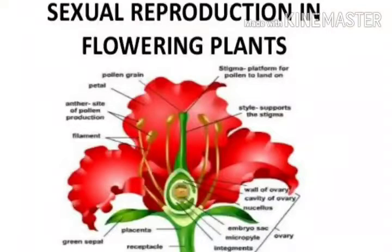Dear Students, in the last class we completed the first chapter, Reproduction in Organisms. Today we are going to discuss the second chapter, Sexual Reproduction in Flowering Plants.